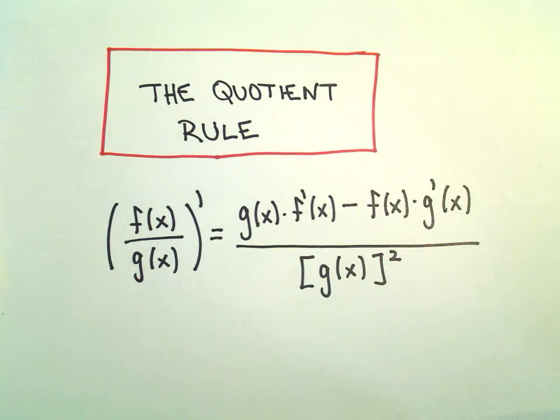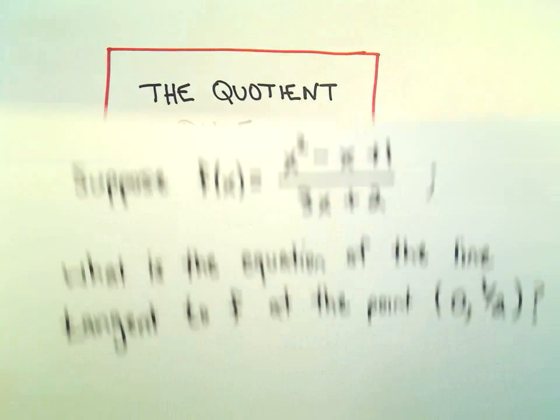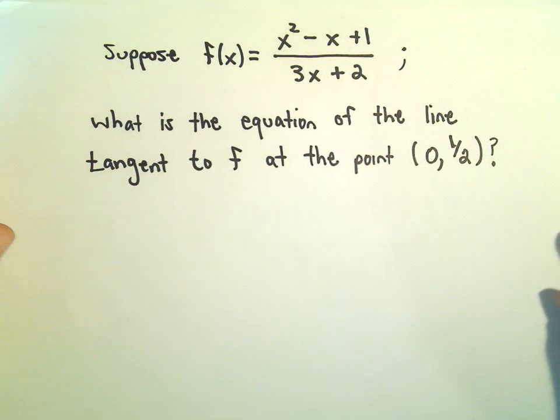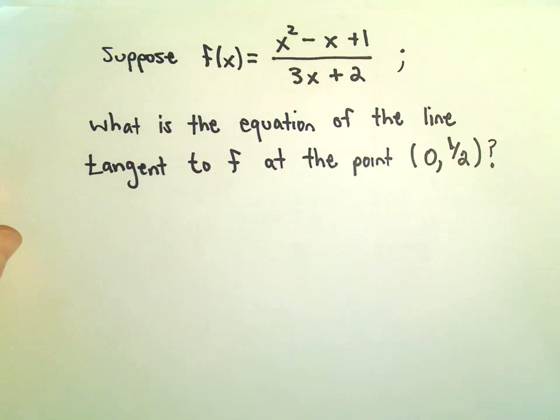Alright, so here we're going to look at one more example related to the quotient rule. We've got the function f(x) = (x² - x + 1)/(3x + 2). We want to find the equation of the tangent line at the point (0, 1/2).